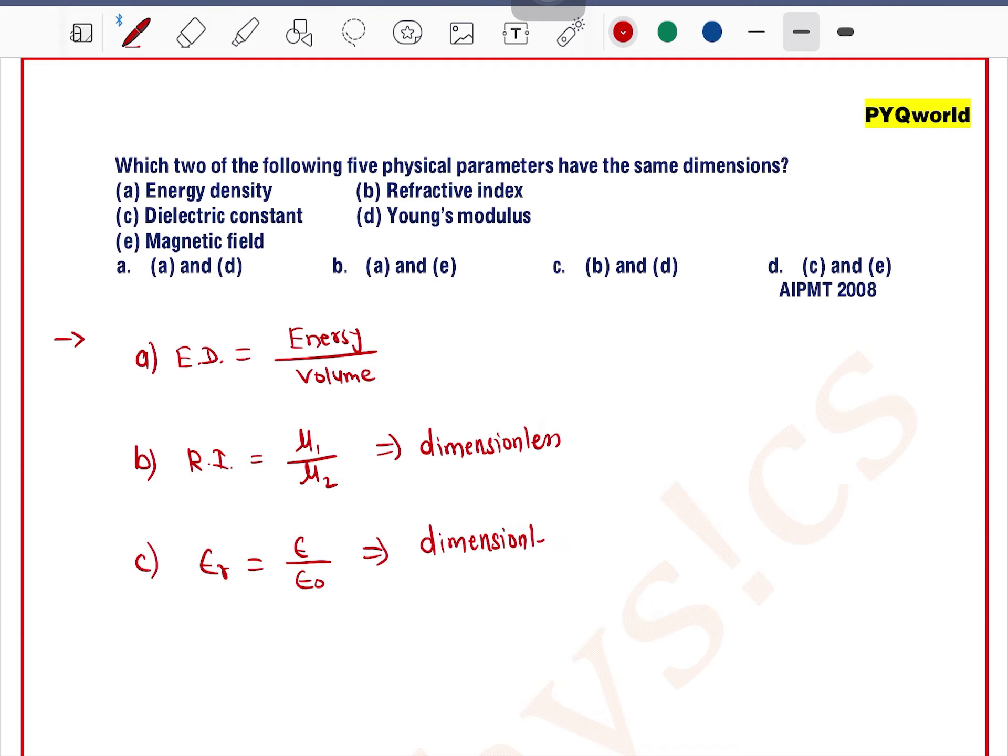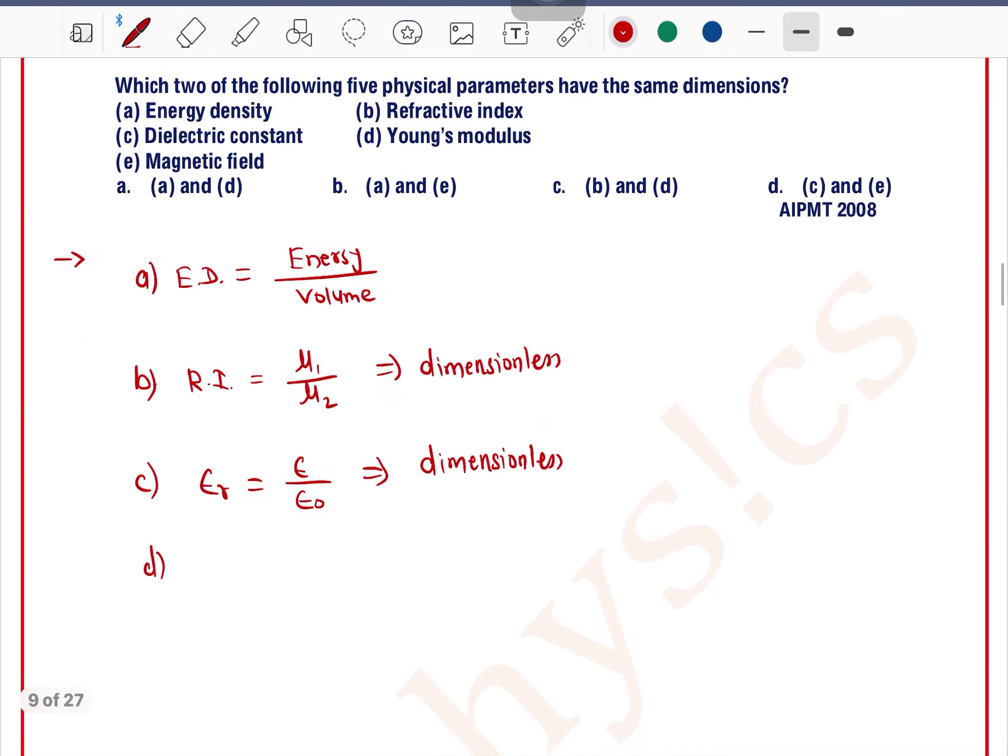Option D: Young's modulus. Young's modulus is stress upon strain, so it has some kind of dimensions. Option E: Magnetic field.